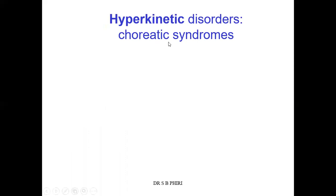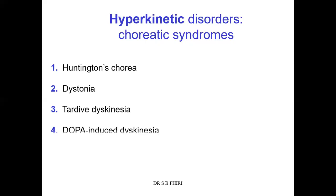Moving on to another form of disease — hyperkinetic disorders. An example is Huntington's disease, where you have chorea — choreatic syndromes, which are involuntary abnormal dancing movements very common in Huntington's disease. Some examples of hyperkinetic disorders include Huntington's disease, dystonia, tardive dyskinesia, dopa-induced dyskinesia, hemiballismus, and Tourette syndrome.